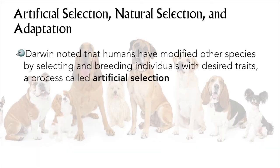One of the first lines of evidence pursued by Darwin in Origin of Species is the fact of artificial selection. Artificial selection is the modification of species by humans using selective breeding to change organisms from their wild-type forms.